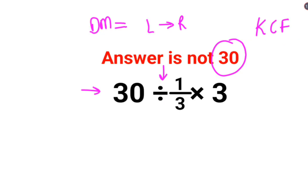K stands for keeping the first number as it is, C stands for changing the division sign to multiplication, and F stands for flipping or taking the reciprocal of 1/3, which is 3 multiplied by 3.